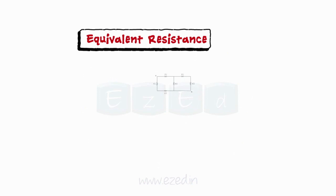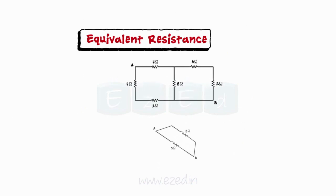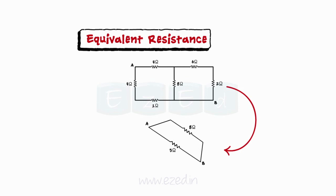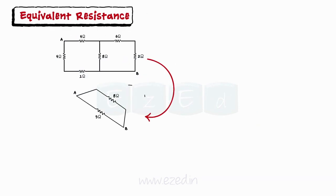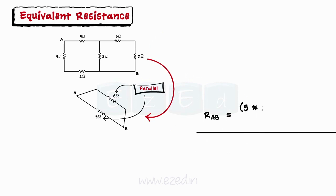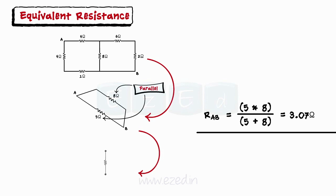After simplifying the entire network, we can see that across the two points A and B, we have two resistors connected in parallel. Finding their equivalent resistance gives the required answer. Thus, the resistance between points A and B is 3.07 ohms.